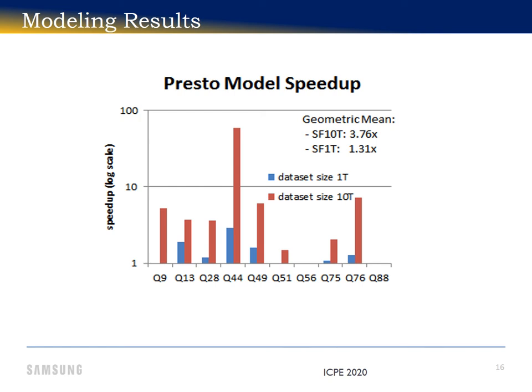Usually, the larger the amount of data to be processed, the higher the speedup. For example, for Presto, increasing the dataset size from 1TB to 10TB will cause the geometric mean speedup to increase from 1.3 to 3.7.